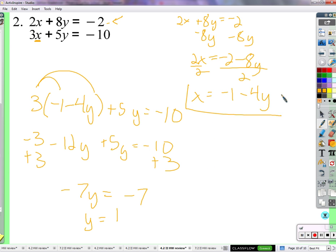And we have this equation that could easily tell us what x is if we give it y. y is 1, so x equals negative 1 minus 4 times 1. x equals negative 1 minus 4, negative 5. The solution is (negative 5, 1).